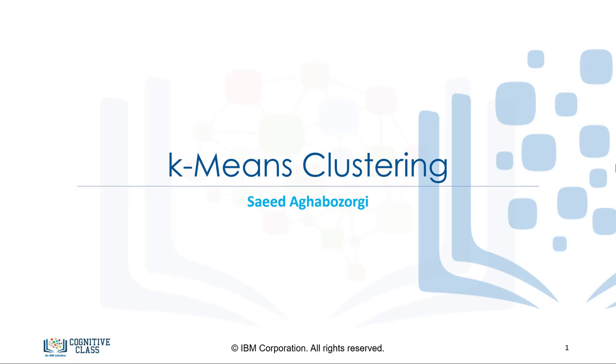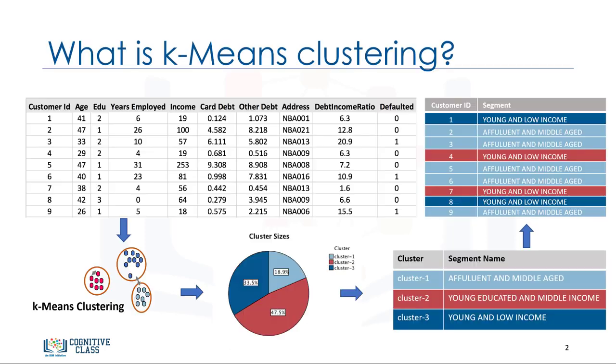Hello and welcome. In this video, we'll be covering k-means clustering. So let's get started. Imagine that you have a customer data set and you need to apply customer segmentation on this historical data. Customer segmentation is the practice of partitioning a customer base into groups of individuals that have similar characteristics. One of the algorithms that can be used for customer segmentation is k-means clustering. k-means can group data only unsupervised, based on the similarity of customers to each other.